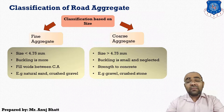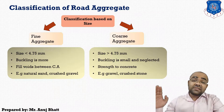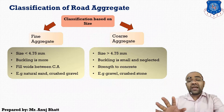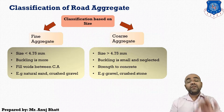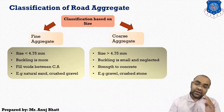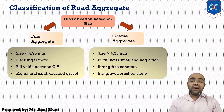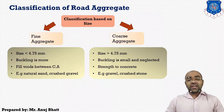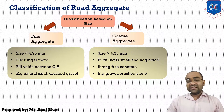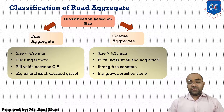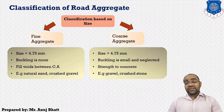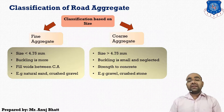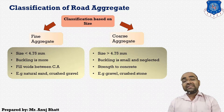80 mm size is considered the maximum size of aggregate that can be used in construction. Using the largest possible maximum size results in a reduction of cement content, reduced water requirement, and reduced drying shrinkage. However, the maximum size of aggregate may be limited by the thickness of the section, the spacing of reinforcement, the clear cover, the mixing process, and the placing techniques.